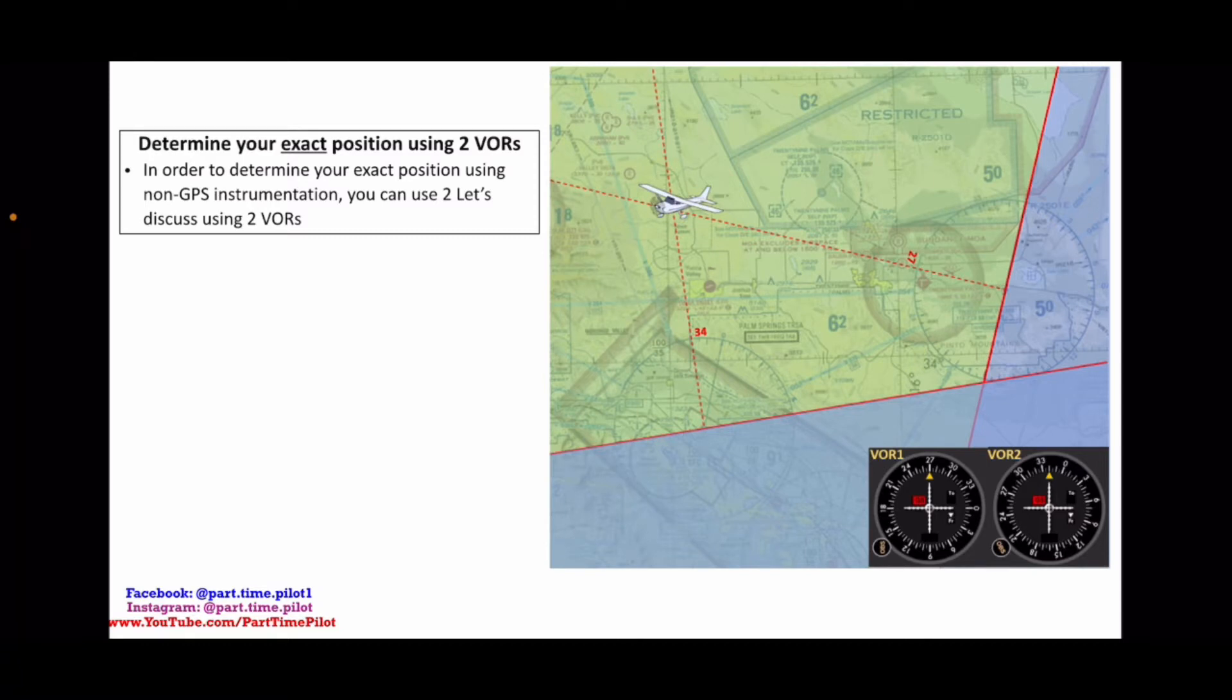So let's get to the general outline and then we'll do an example. So in order to determine your exact position using non-GPS instrumentation, you can use two VORs.